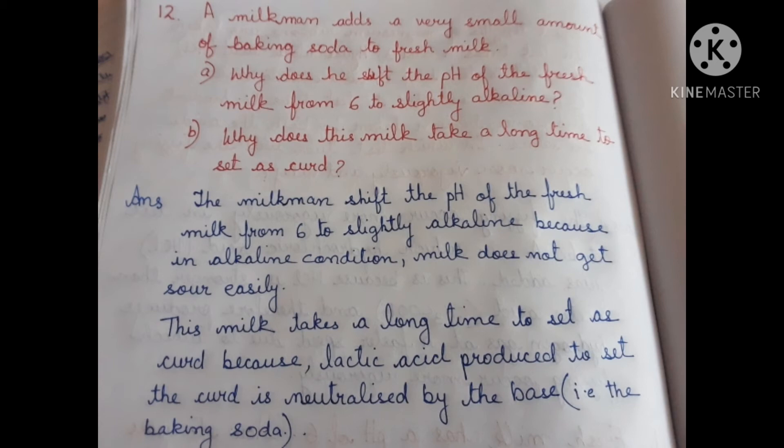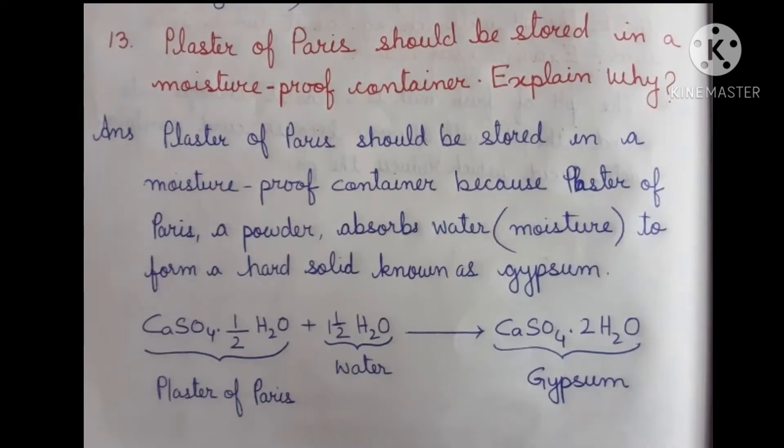Question 13: Plaster of Paris should be stored in a moisture-proof container. Answer: Plaster of Paris, a powder, absorbs water or moisture to form a hard solid known as gypsum. The equation: CaSO₄·½H₂O + 1½H₂O → CaSO₄·2H₂O.